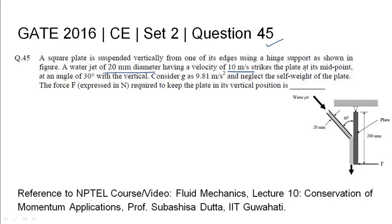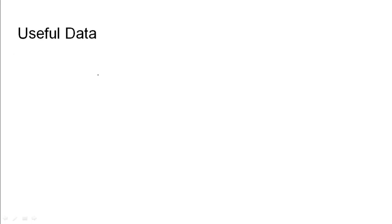The jet strikes the plate at its midpoint at an angle of 30 degrees with the vertical. Consider g as 9.81 meters per second squared and neglect the self-weight of the plate. The force F expressed in newtons required to keep the plate in its vertical position is to be found.